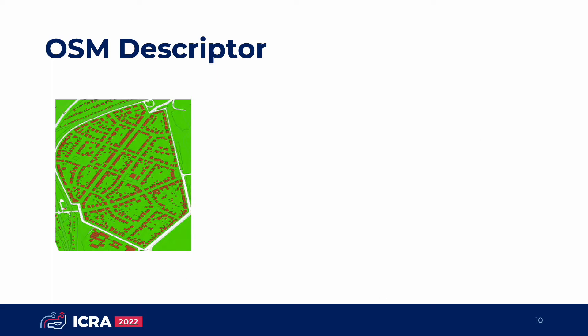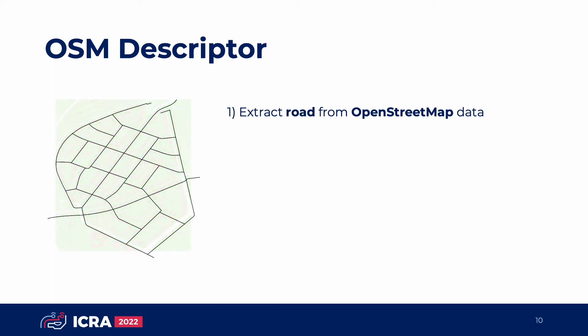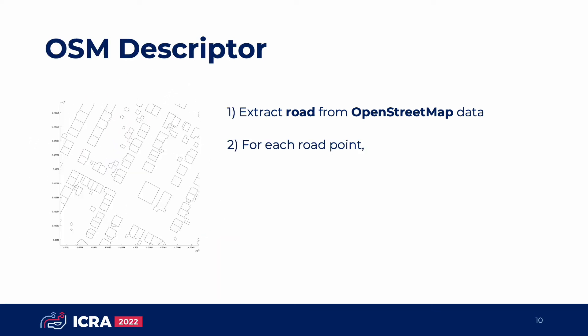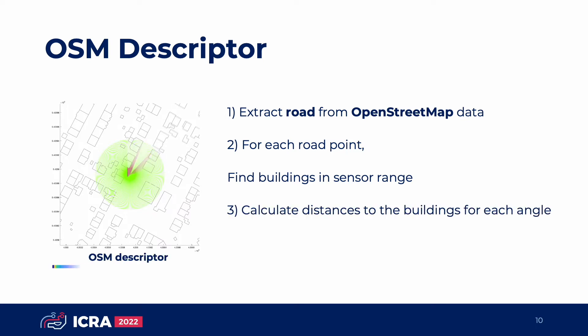This is the OSM descriptor making procedure. First, we extract the road from OpenStreetMap data, then for each point, we find buildings in LiDAR sensor range. Finally, we calculate distances to the buildings for each angle. However, OpenStreetMap is fixed to face north, and the vehicle is moving freely. Therefore, we need to make these descriptors rotation invariant to compare them efficiently.